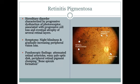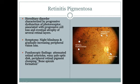Retinitis pigmentosa is a hereditary disorder characterized by progressive dysfunction of photoreceptors, with progressive cell loss and eventual atrophy of several retinal layers. Symptoms are night blindness and gradually increasing peripheral vision loss with central vision preserved. You recognize it by attenuated retinal arteries, pale optic disc, and clumping of retinal pigment.